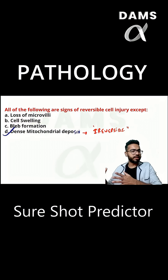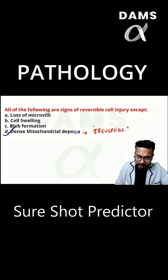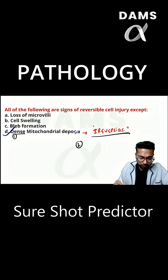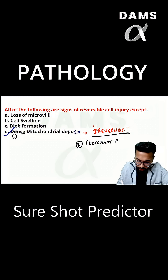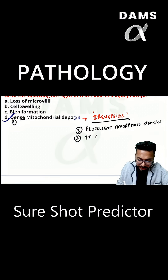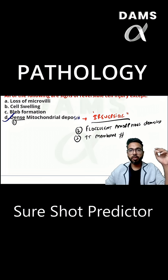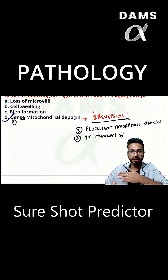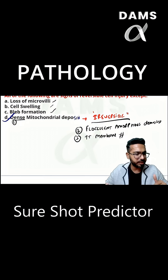There has to be one question from reversible and irreversible. When you talk about irreversible, three things are very important: mitochondrial deposits become very dense, amorphous densities become very flocculent, and third is more severe membrane damage. More severe membrane damage, more amorphous densities, more dense mitochondrial deposits — that is what makes an injury irreversible. The rest are all signs of reversible cell injury.